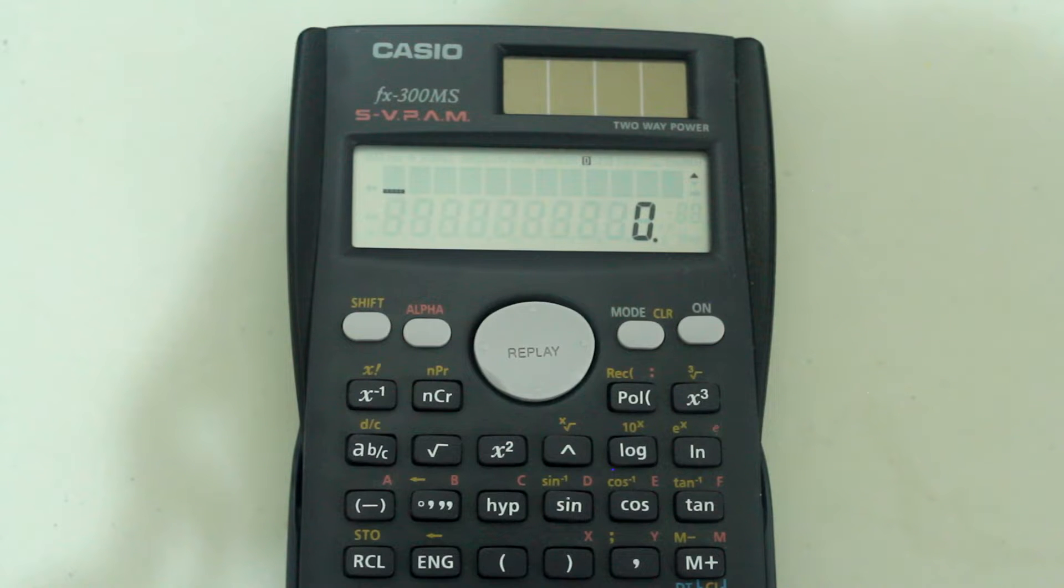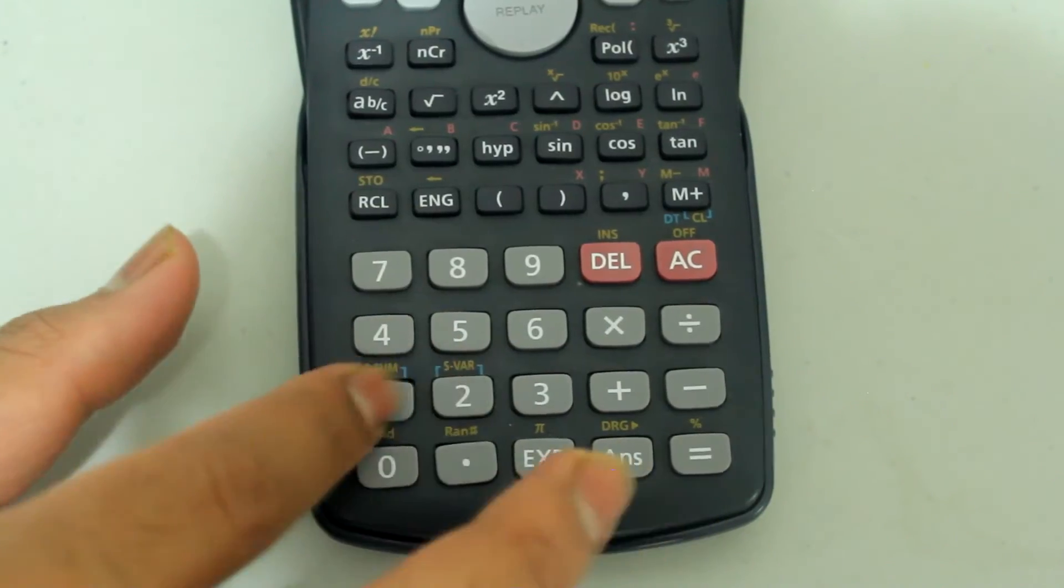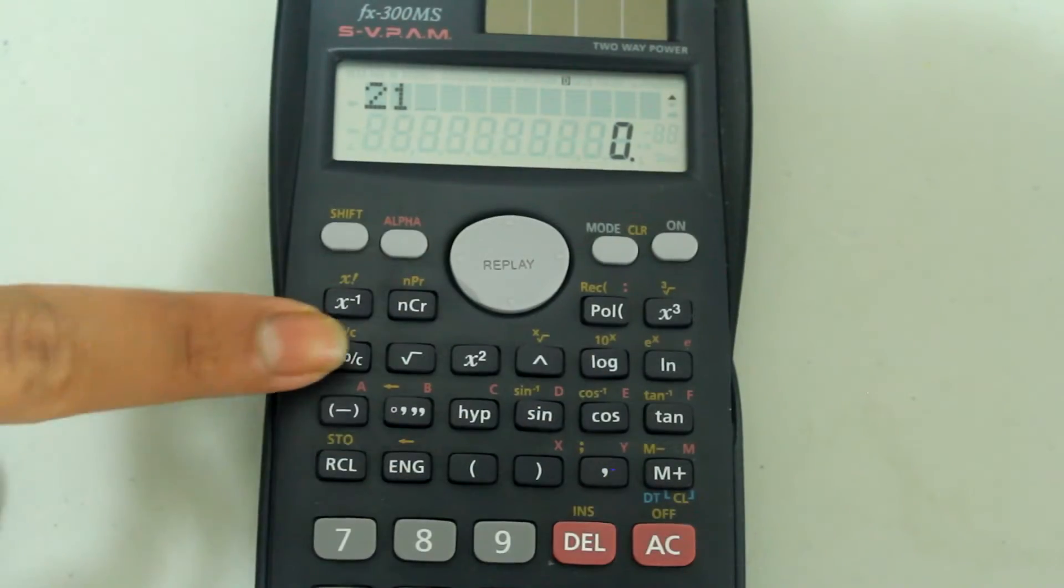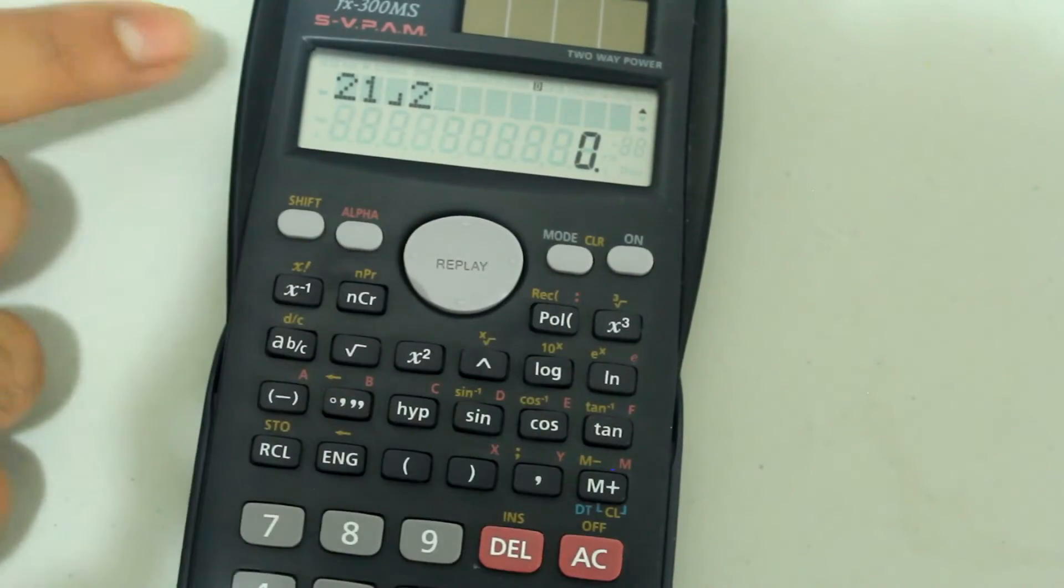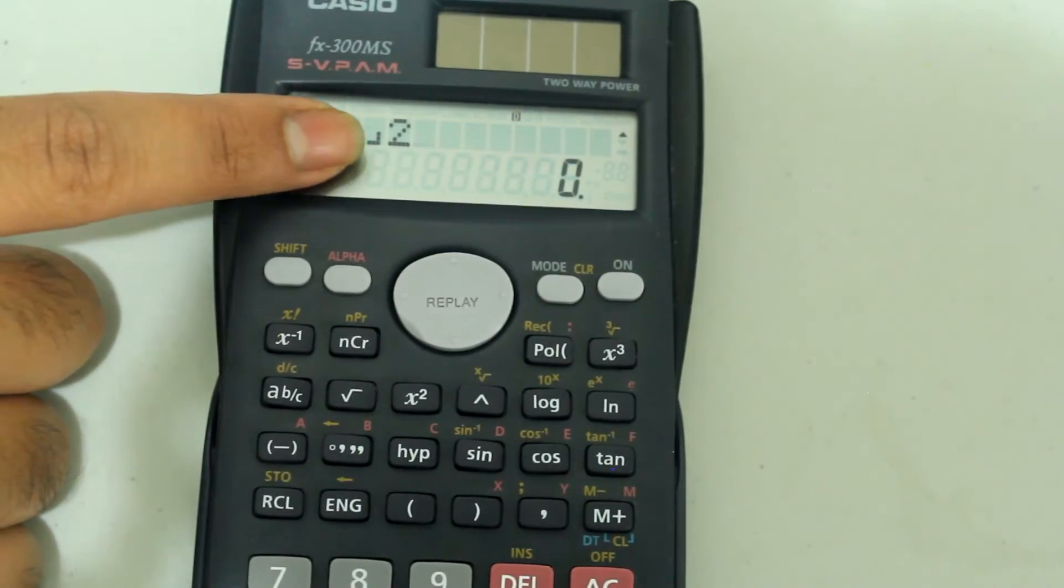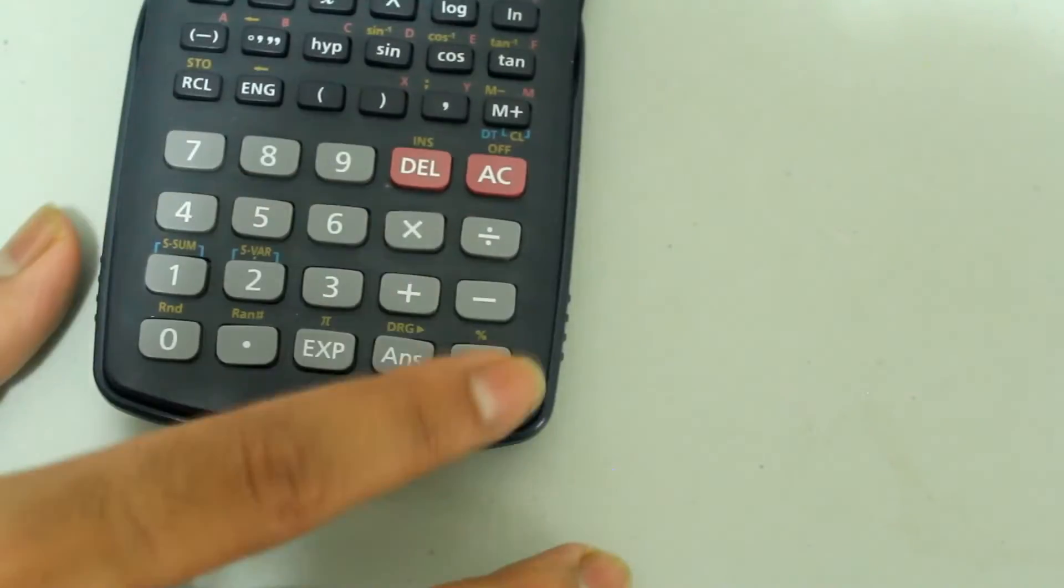You can also use the button to convert between fractions and decimals. For example, if I type in 21, fraction button, 2, it looks like this: 21, and this symbol acts as a fraction bar, so 21 over 2, and I press equals.